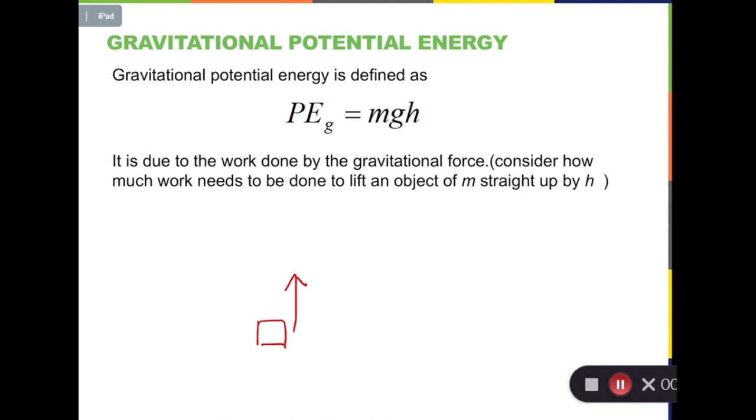We can find the work done by gravity by using the regular formula. If we use gravity, which is m times g, times the height the box has lifted over the period of time, times cosine 180 degrees.